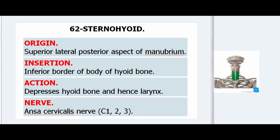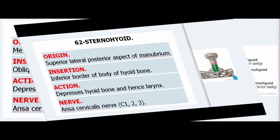62. Sternohyoid. Origin: Superior lateral posterior aspect of manubrium. Insertion: Inferior border of body of hyoid bone. Action: Depresses hyoid bone and hence larynx. Nerve: Ansa cervicalis nerve, C1–2–3.